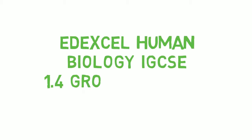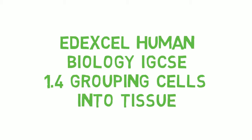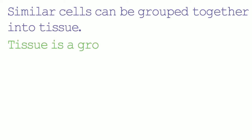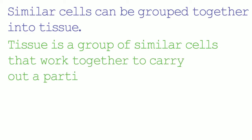This video is going to be looking at grouping cells into tissue. Similar cells can be grouped together into tissue. Tissue is a group of similar cells that work together to carry out a particular function. We have different subgroups of tissue depending on what the function of the tissue is. Throughout the course we're going to be looking at these different types of tissue in more detail, but this video is just a little introduction into the different types of tissue.